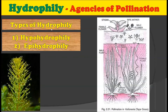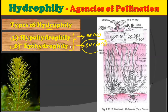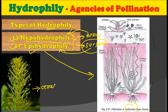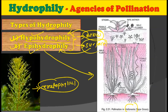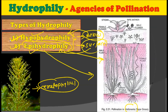Now let's consider the types of hydrophily. There are two types: first is hypohydrophily and second is epihydrophily. These two types are distinguished on the basis of whether the flower is pollinated below the water surface or on the surface. If the flower gets pollinated on the surface, it is called epihydrophily; and if pollinated below the water surface, it is called hypohydrophily. Valisneria shows epihydrophily, while Ceratophyllum shows hypohydrophily — its pollination occurs below the water surface.